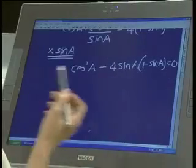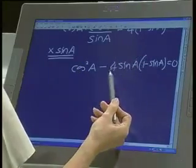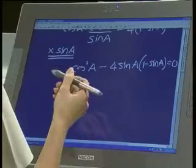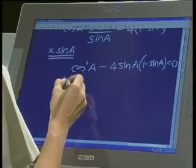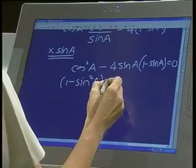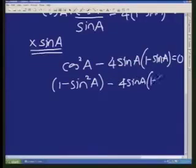Now, the choice is, I've got a cos squared and I've got a sine squared. I can either multiply this out, or I can say that cos squared can also be written as 1 minus sine squared a, that's our quadratic identity, minus 4 sine a and the bracket 1 minus sine a equals 0.